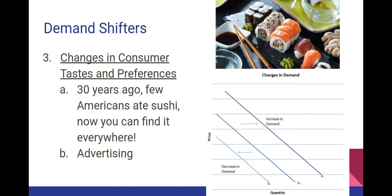The third demand shifter is changes in consumer tastes and preferences. This is about how we as people naturally start to like different things over time. A good example is that 30 years ago, very few Americans ate sushi — almost nobody unless they had a connection to Japan. Now you can find it just about everywhere. Another good example is how there has been a change in how we buy things: people like to buy things online now rather than going to stores, showing a change in demand for the way we buy things, not necessarily what we buy.